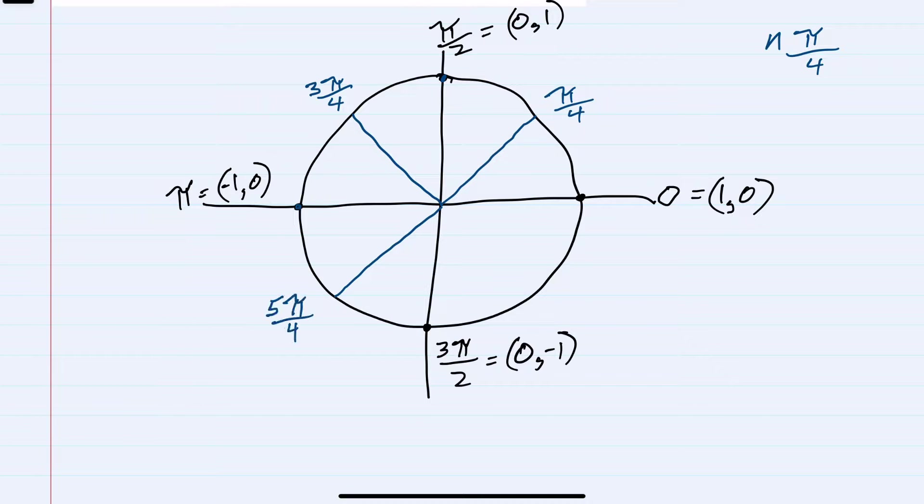Five π/4. Six π/4 is 3π/2. And then seven π/4. We'll come back to list these terminal coordinates in a moment.